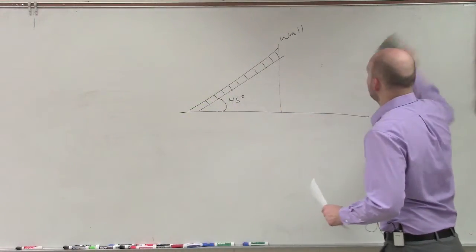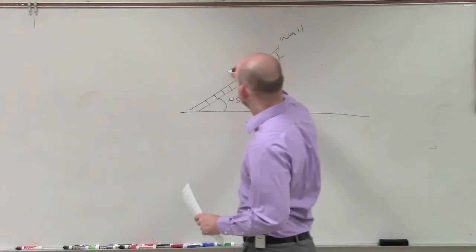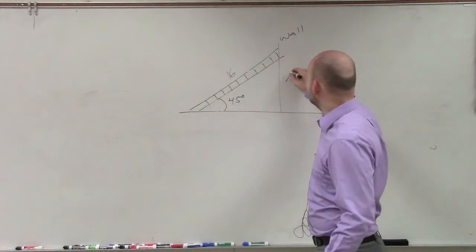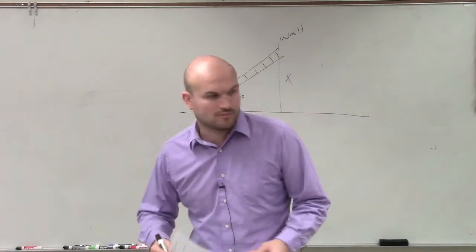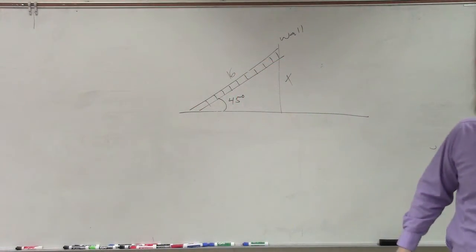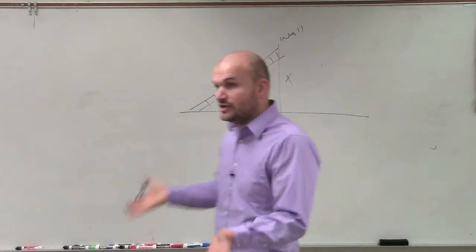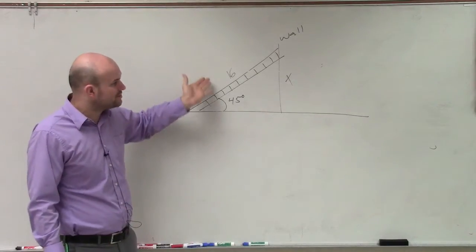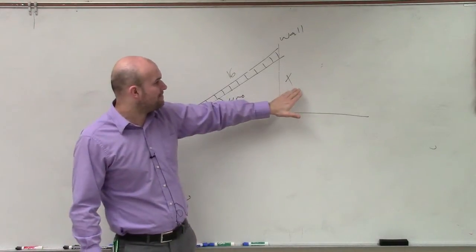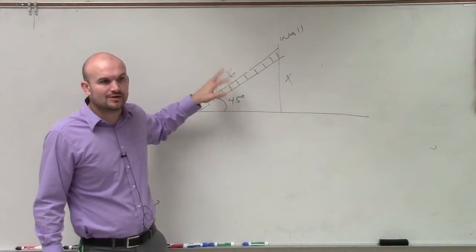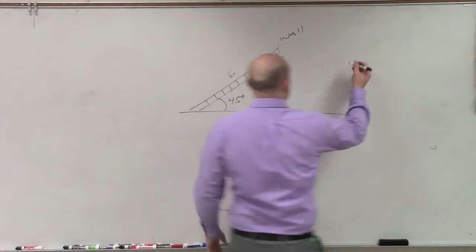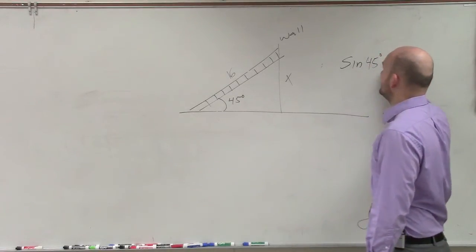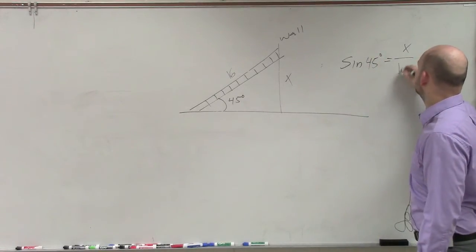So we have an angle of elevation of 45 degrees, and the ladder is 16 feet long. It asks how high up the wall does the ladder reach. To solve this, we just need to set up our trig function. I notice I have the opposite and the hypotenuse, so the trig function I want to use is sine. So: sine of 45 degrees equals opposite over hypotenuse.